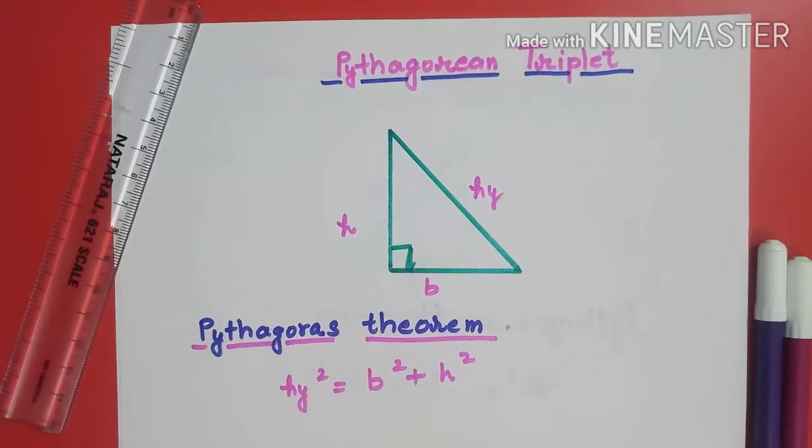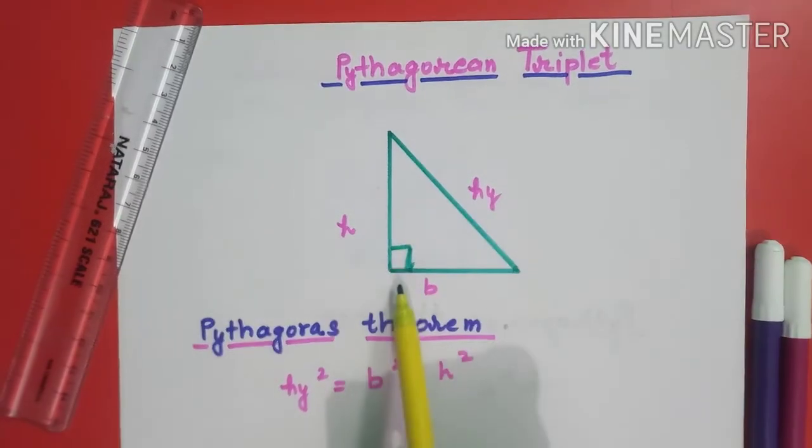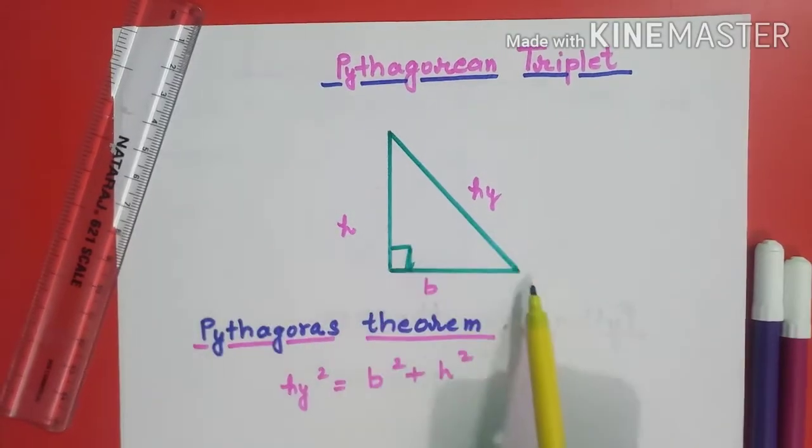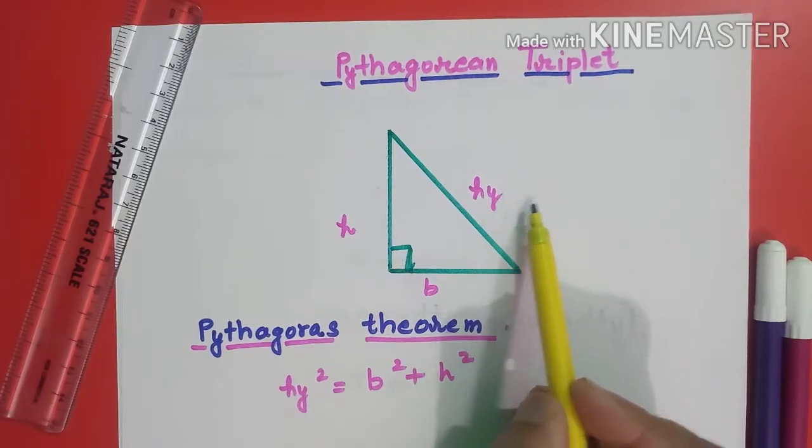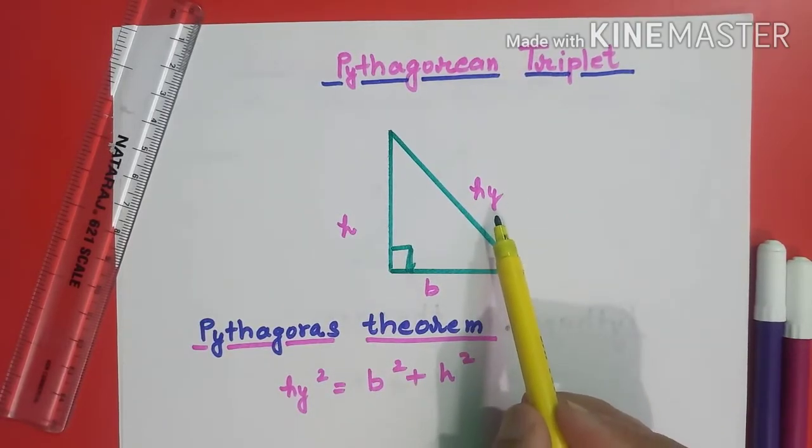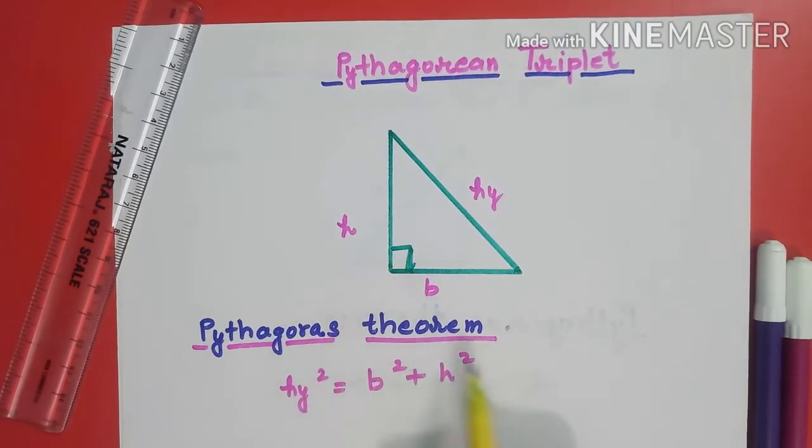Let's see what is Pythagorean triplet. Students, in geometry we have learnt about Pythagorean theorem, right? What it says is that in case of a right-angled triangle, like this right-angled triangle, this is its base, this is its height and this side is its hypotenuse. And according to Pythagorean theorem, we have done this before.